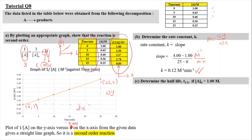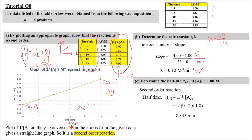For part C, determine the half-life T½ if A0 equals 1 molar. The half-life for the second-order reaction is T½ equals 1 over (K times A0). K was obtained from part B and A0 equals 1, so substituting gives T½ equal to 8.333 minutes. That's all for this tutorial video on section 1.1. See you again some other time — thank you and goodbye.